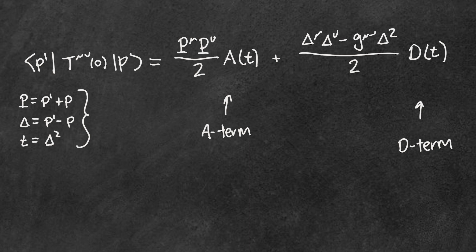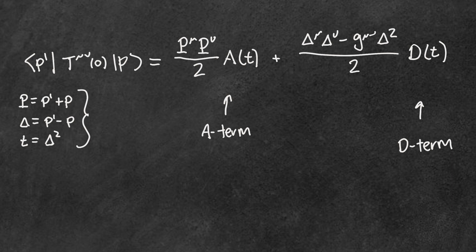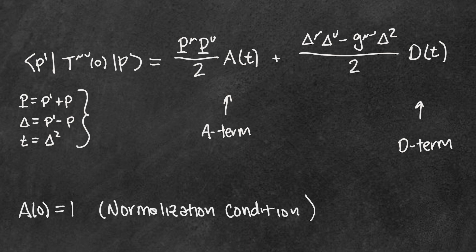What I'm really interested in is the D-term — this thing we think has to do with pressure distribution inside the proton. But in order to trust that we're calculating it properly, we have to test our calculation against a sanity check, which is the normalization of the A-term. At zero momentum transfer, A has to equal one — it's a fundamental constraint, it can't budge.